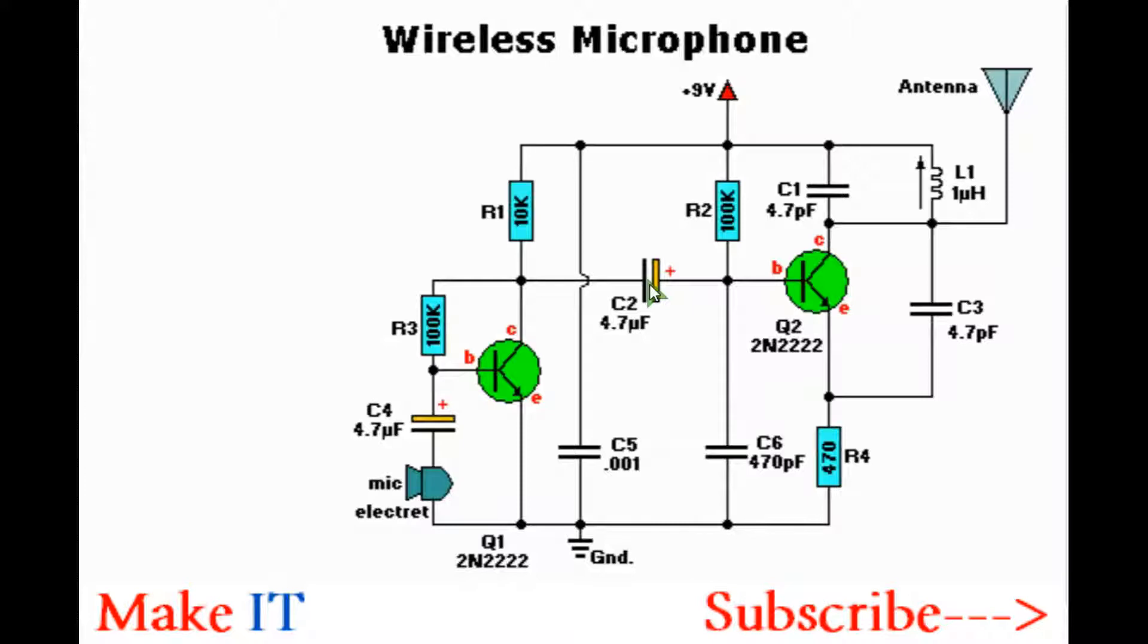A simple circuit you can make to make a wireless microphone is shown here. Basically, it's an FM transmitter circuit. You need just two transistors - you can use the 2N2222 transistors. They are high frequency and work fine.